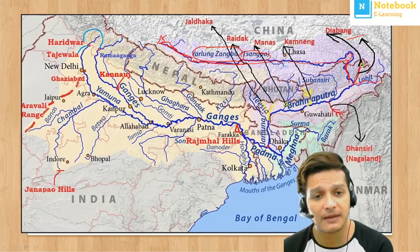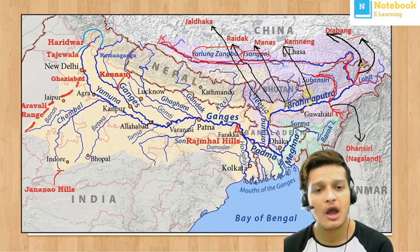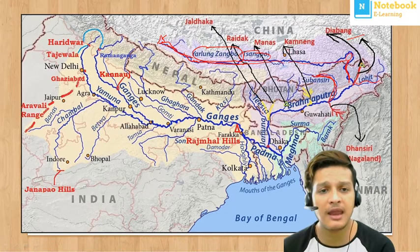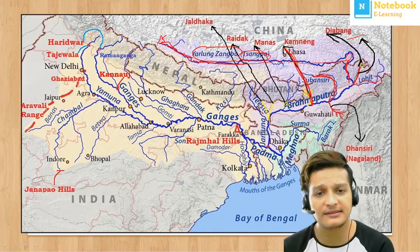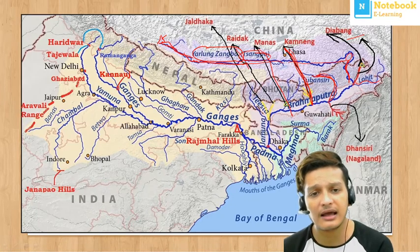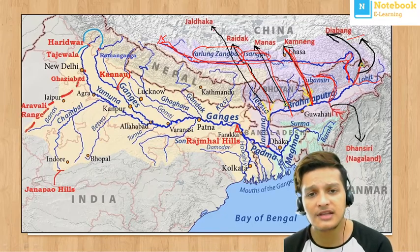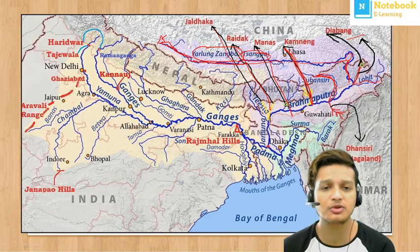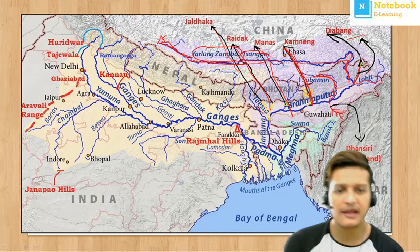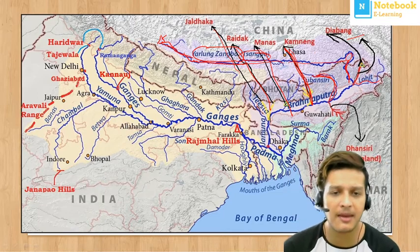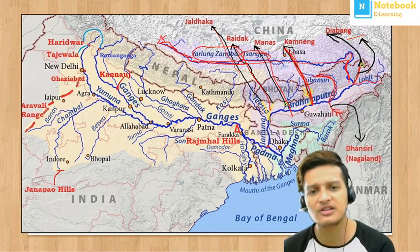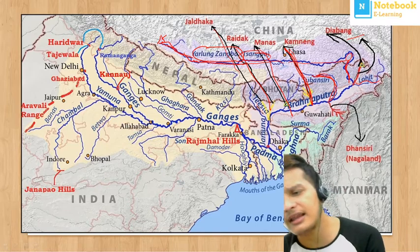Looking at this further, the Subansiri River is the first right bank tributary. Then the Kameng River, then the Manas River from the next section, then the Raidak River — which was a question asked — and then the Jaldhaqa River. So the order of right bank tributaries is: Subansiri, Kameng, Manas, Raidak, then Jaldhaqa.